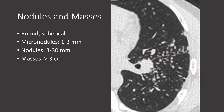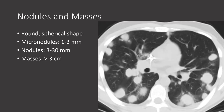Let's now discuss nodules and masses, which we define as being round or spherical on chest x-ray or CT. We subdivide these into micronodules (less than 3mm), masses (greater than 3cm or 30mm), and nodules as anything in between. On the right-hand CT image, we see multiple small solid, well-defined nodules — an example of micronodules from sarcoidosis. This CT image demonstrates multiple nodules and masses from metastatic colon cancer.